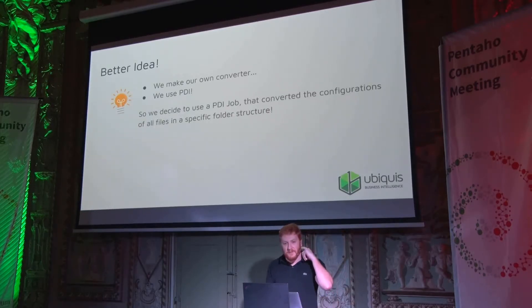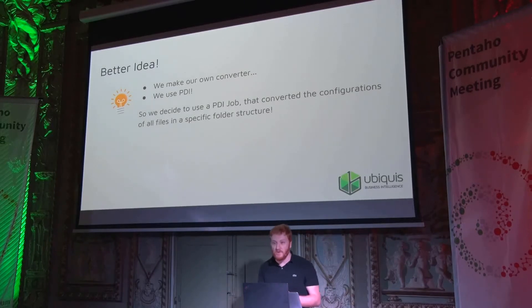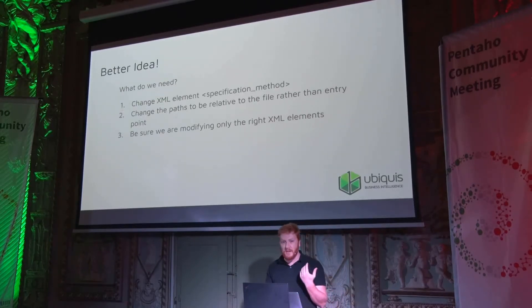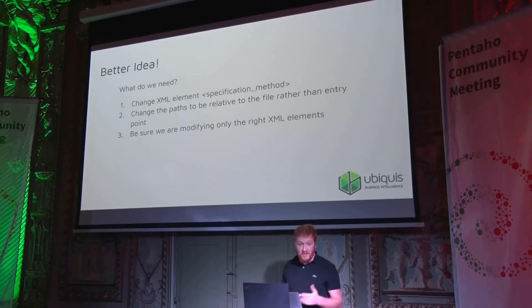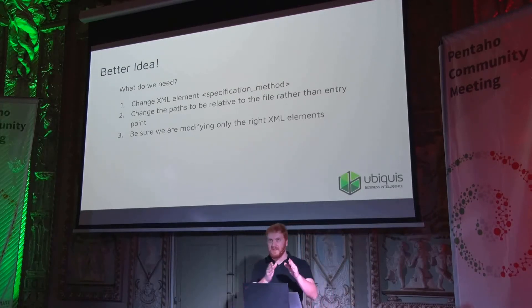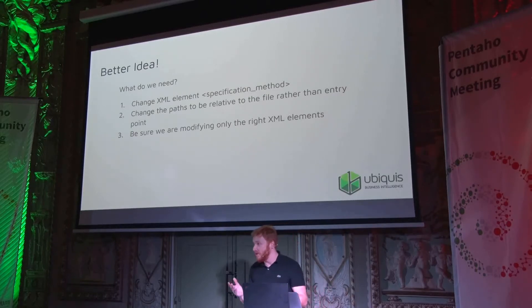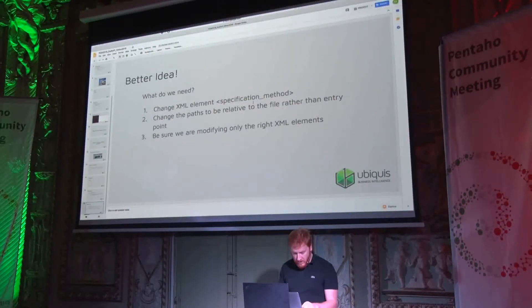We decided to just do a converter — convert this into flat files. Basically go to the XML and change what we need to change so that this is no longer a file-based repo and is now in flat files. The XML element we need to look for is the specification method — that's what tells PDI whether it's a repo or whether it's a file. It basically says rep name or file name. If it's rep name, PDI knows this is a repo; if it's file name, it knows to go get a file system path.